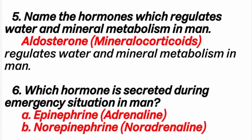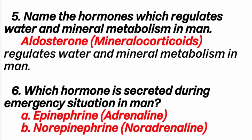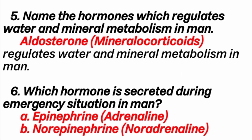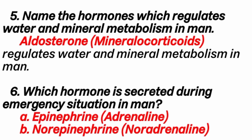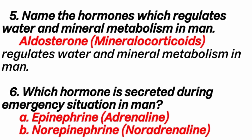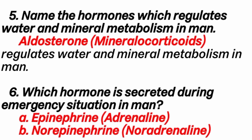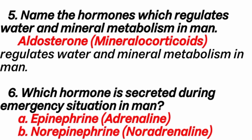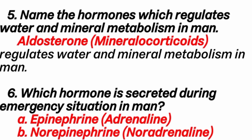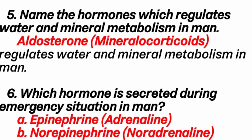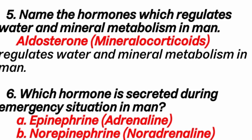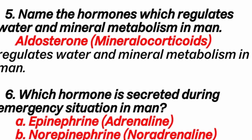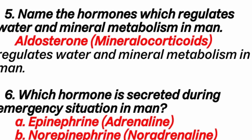5th question: name the hormone which regulates water and mineral metabolism in man. Answer: aldosterone, known as mineralocorticoid, regulates water and mineral metabolism. 6th question: which hormone is secreted during emergency situations in man? Answer: epinephrine (also known as adrenaline) and nor-epinephrine (also known as nor-adrenaline). Both hormones together are called emergency hormones, and they are secreted by the adrenal gland, also known as the suprarenal gland, located above the kidneys. Thank you for watching this video.